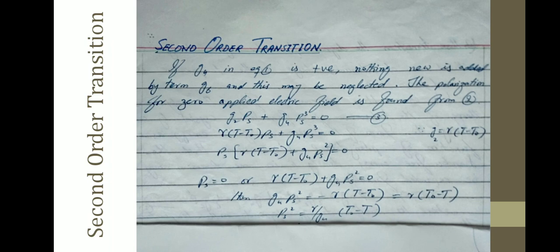For the second-order transition: if G₄ in equation one is positive, nothing new is added by the G₆ term — we can study with only two terms and other terms can be neglected. The polarization for zero applied electric field is found from equation two by taking the extremum condition equal to zero: G₂Pₛ + G₄Pₛ³ = 0, where Pₛ stands for the polarization of second order.